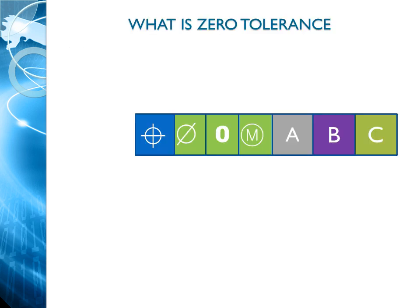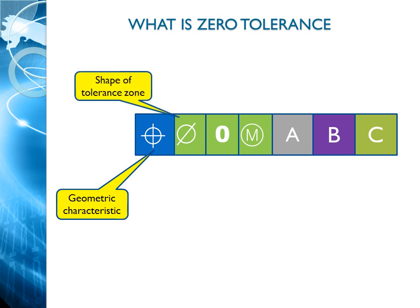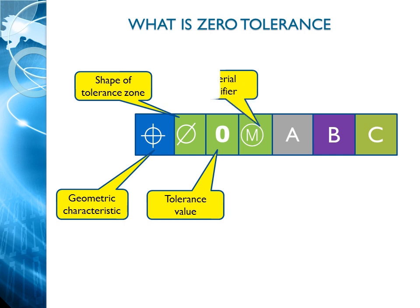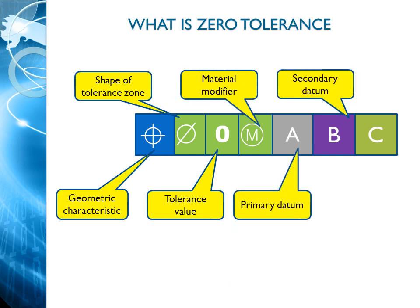What is Zero Tolerance at MMC? Zero Tolerance at MMC is a method of tolerancing part features that includes the geometric tolerance value with a feature of size tolerance, and states as Zero Tolerance at MMC in the feature control frame. The first compartment is the geometric characteristic of position tolerance. The critical observation is the tolerance value: it is Zero Tolerance at MMC with respect to primary datum A, B and C respectively.